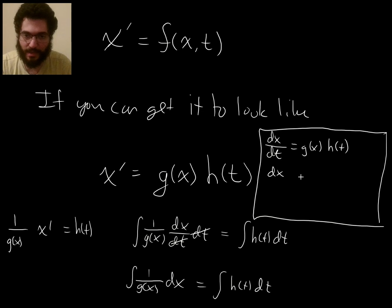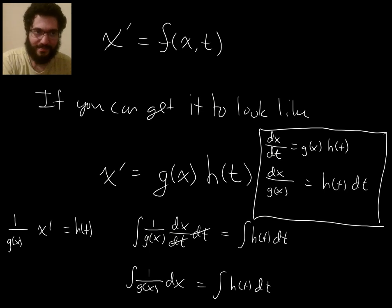So they'll be like, okay, well, then we have dx over g of x equals h of t times dt. Then, once they reach this step, which doesn't make much sense on its own necessarily, you'll just stick a squiggly line in front of both sides and say, okay, now I'm viewing them as integrals.